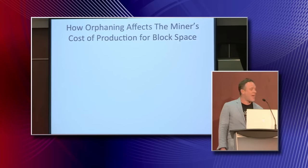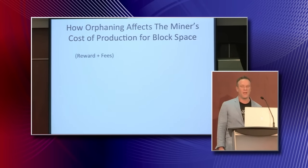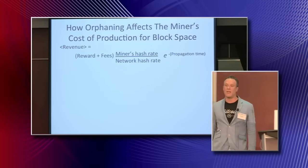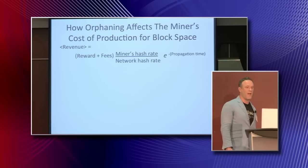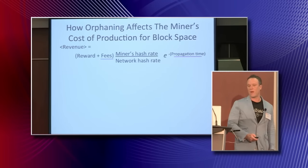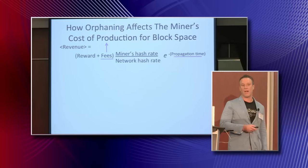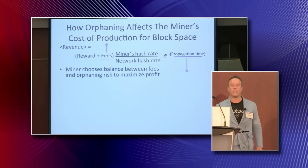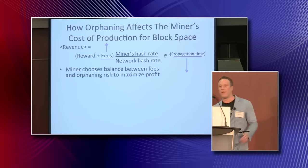Now that we know orphaning is real, how does it affect the miner's cost of production for block space? If a miner finds a block, he gets the block reward plus any fees from the transactions included. His expected revenue per block is what he would earn multiplied by his probability of winning that block, which is the ratio of his hash rate to the network hash rate. We need one more term to account for the fact that the bigger the block is, the more likely it is to be orphaned. My paper shows we can model this as a decaying exponential in the propagation time. The miner can control fees and propagation time — he can get more fees by making his block bigger, but faces a higher orphaning risk. The miner must balance fees against orphaning risk in order to maximize profit.